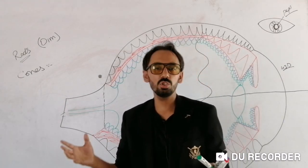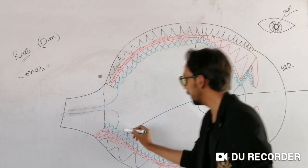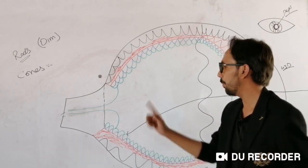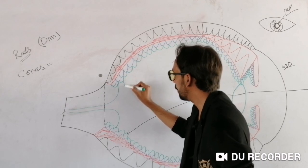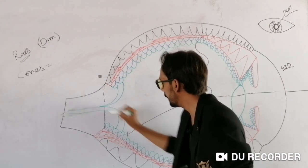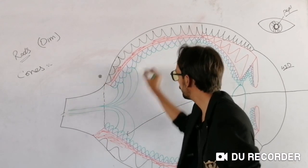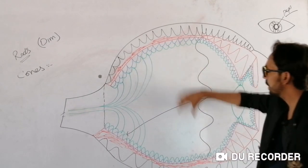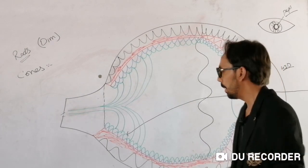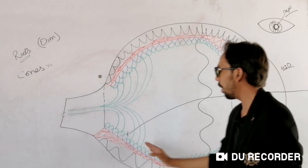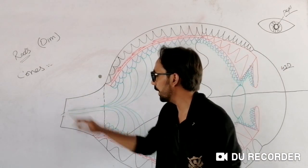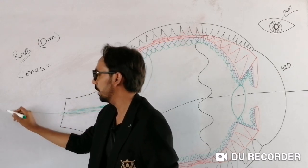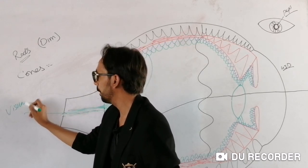We can see all images clearly because all light is converted into action potentials by the rods and cones, and all these action potentials travel through the optic nerve towards the visual cortex.